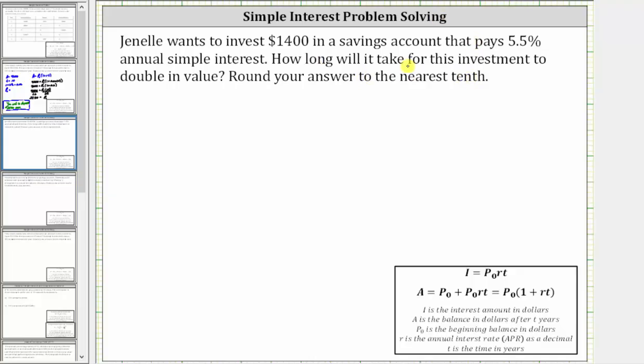To answer this question, we will use the simple interest formula A equals P sub zero times the quantity one plus RT, where A is the balance in dollars after T years, P sub zero is the beginning balance in dollars, R is the annual simple interest rate as a decimal, and T is time in years.